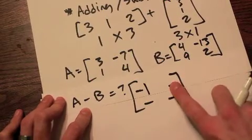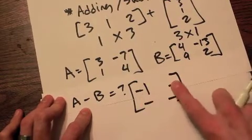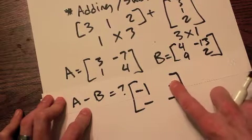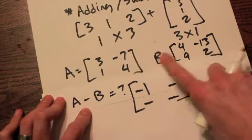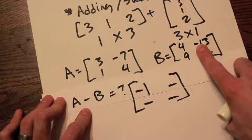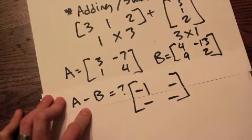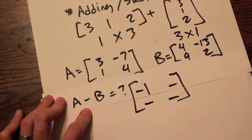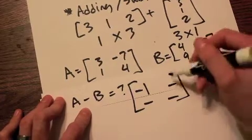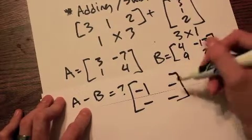You go to the one two position. First row, second column. Negative seven, minus negative thirteen. Well, negative seven, that would be like negative seven plus thirteen. Two negatives make a positive. Thirteen minus seven gives you six.